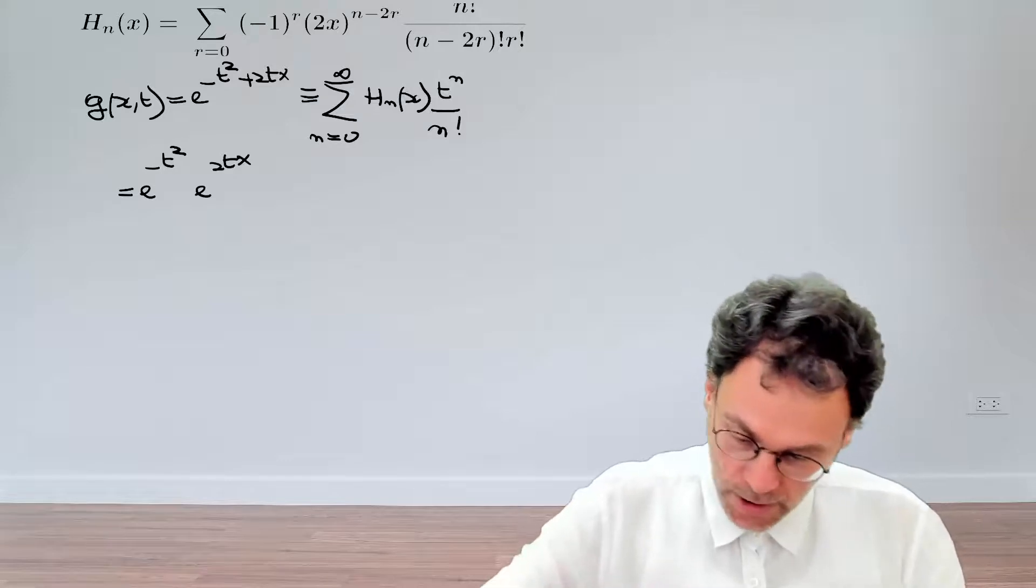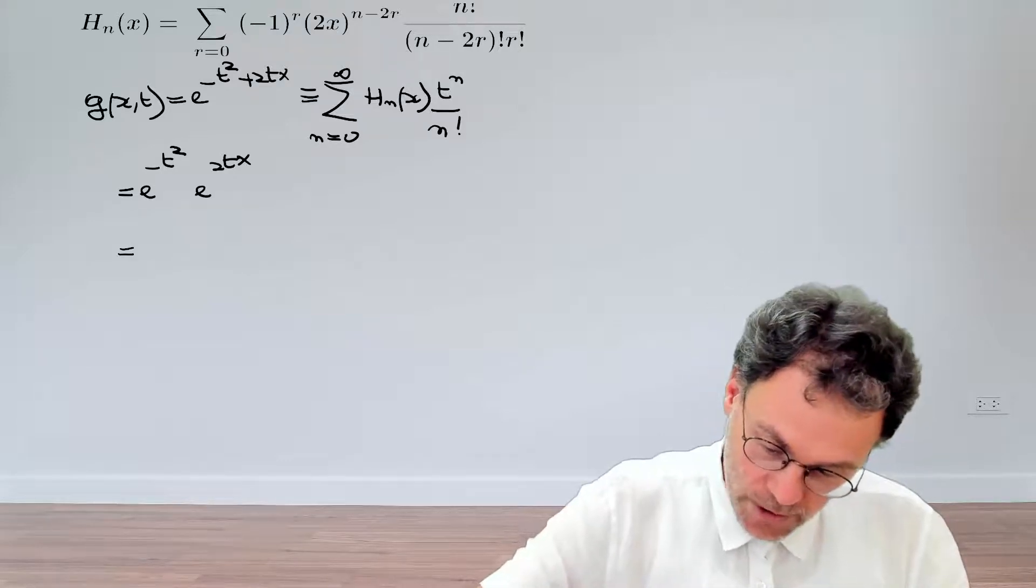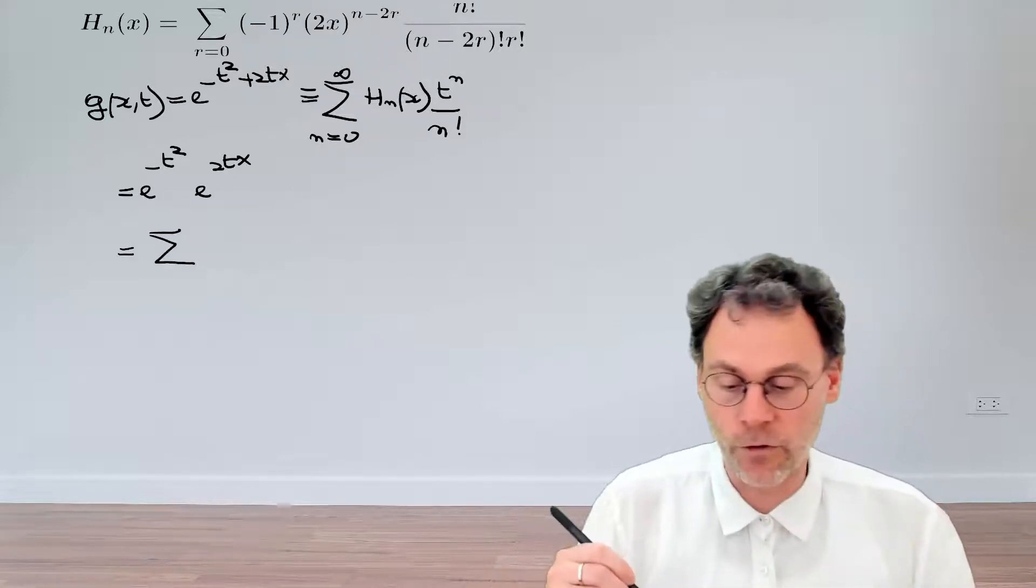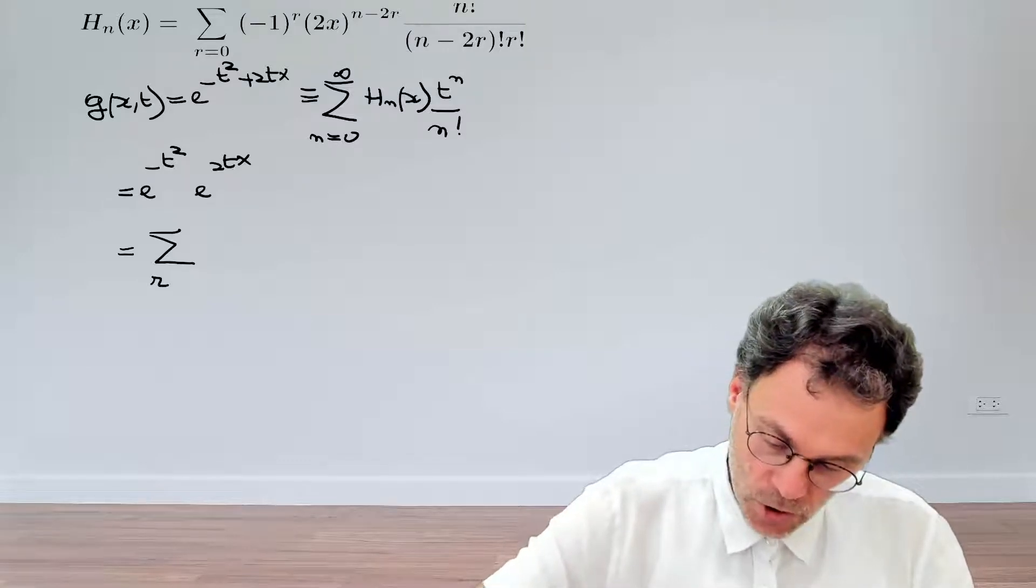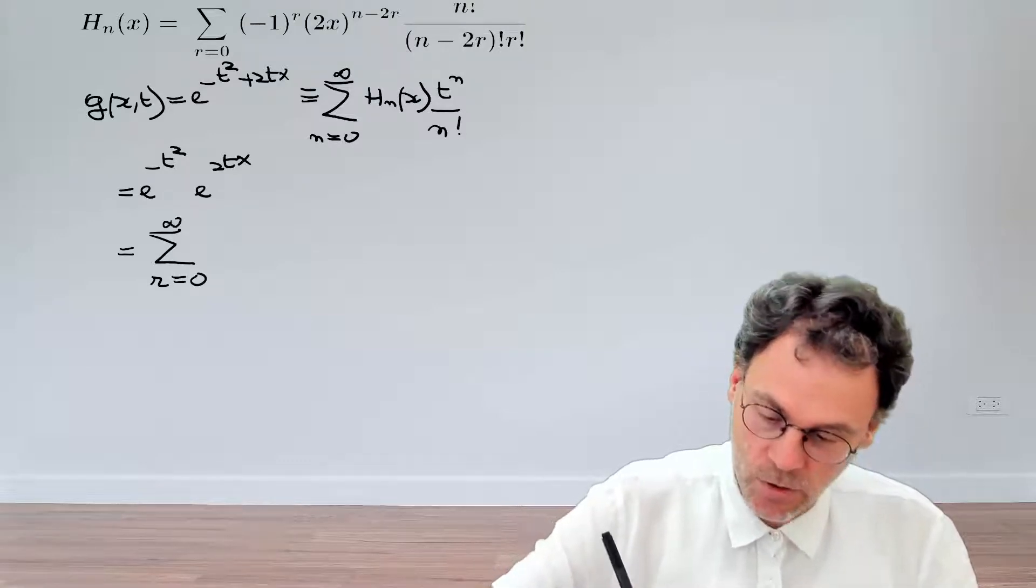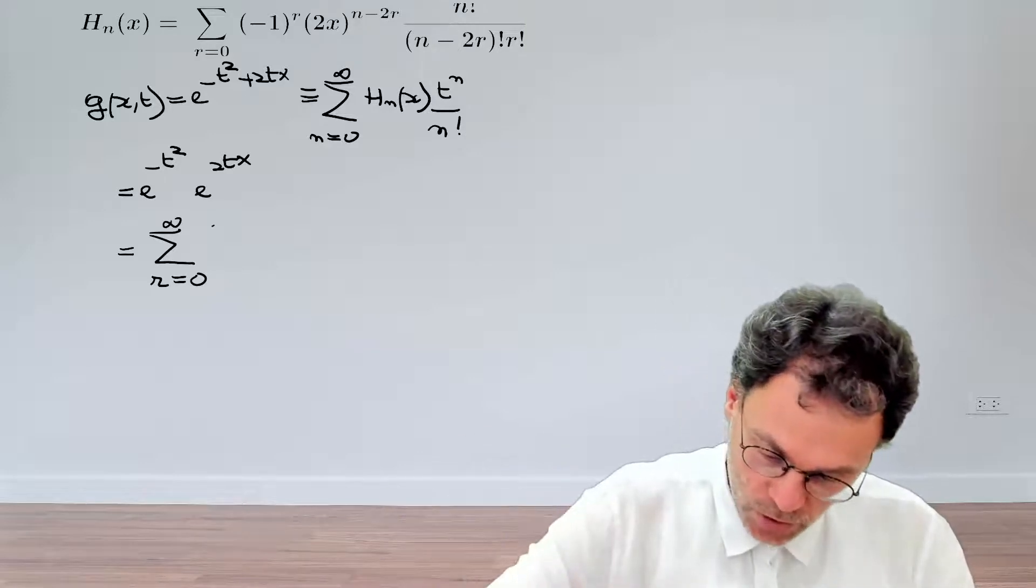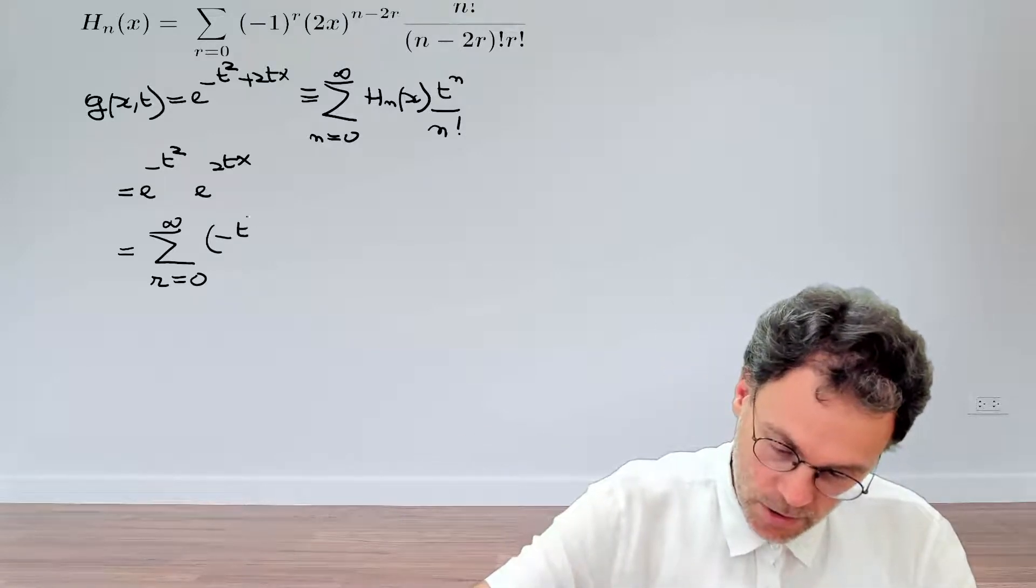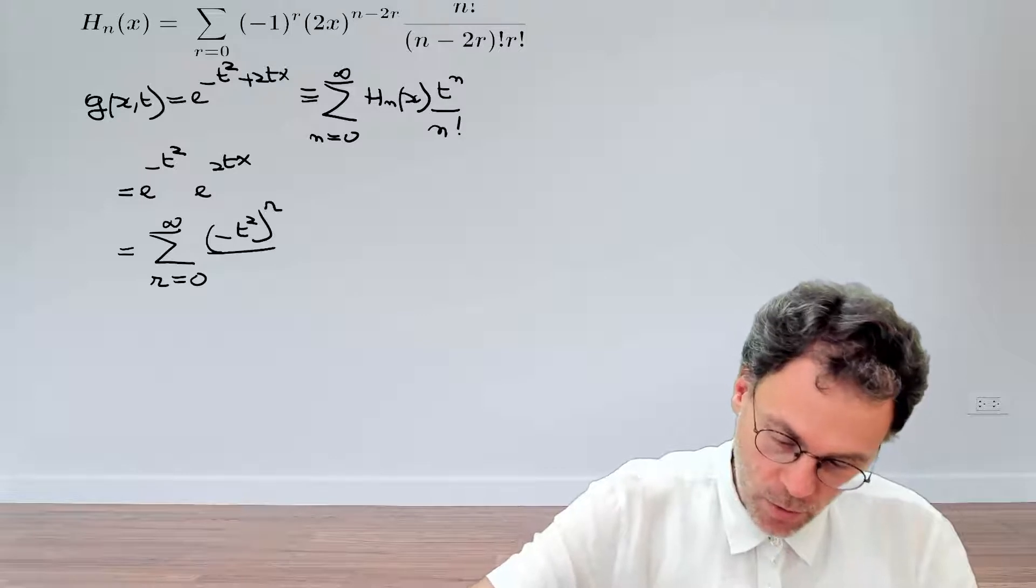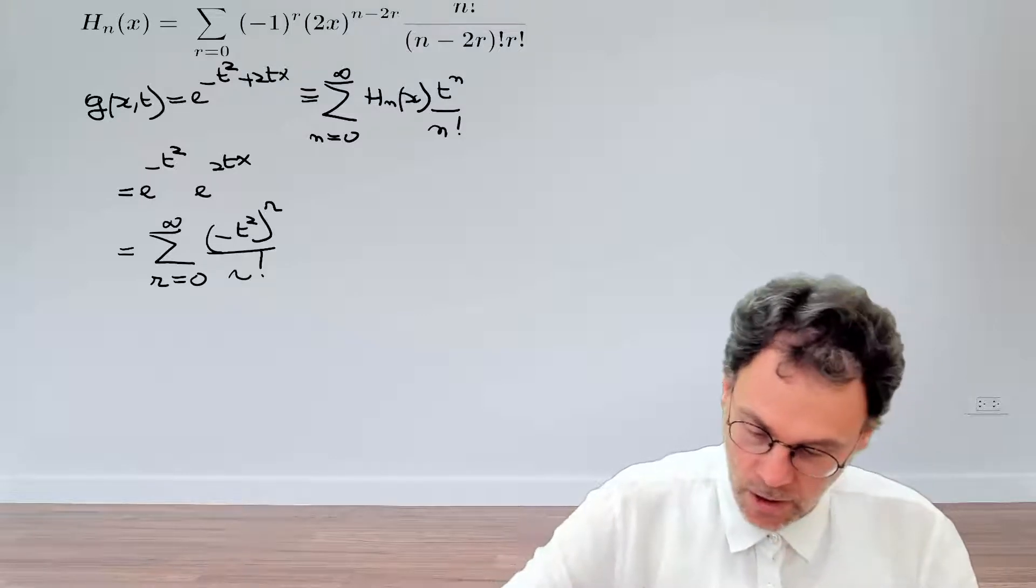Okay, so let's take a product of these two series expansions. For our first factor, we have a summation of r going from 0 to infinity. And then we need the argument of our exponential. So that's minus t squared to the power of r divided by r factorial.